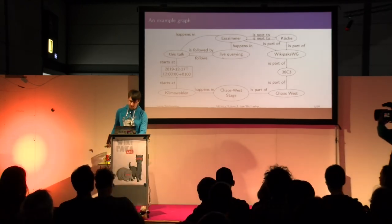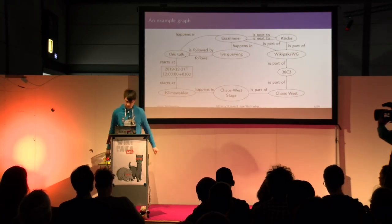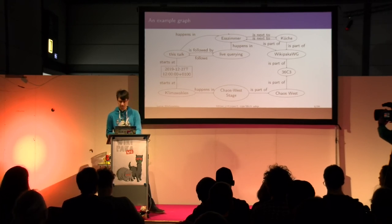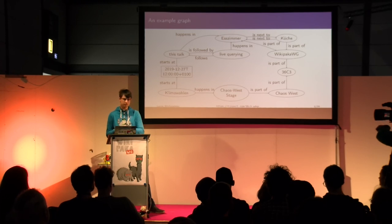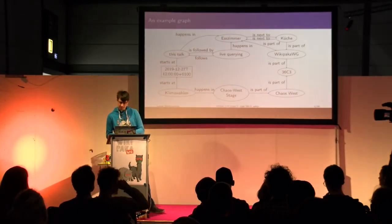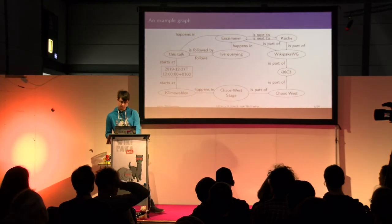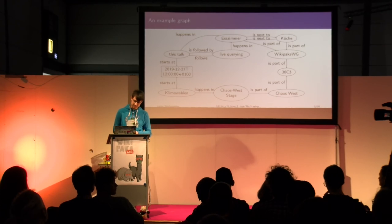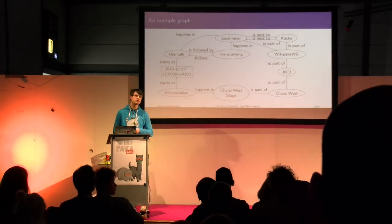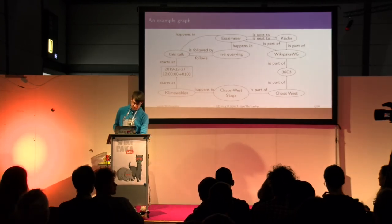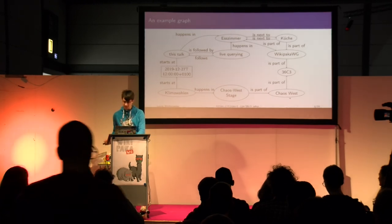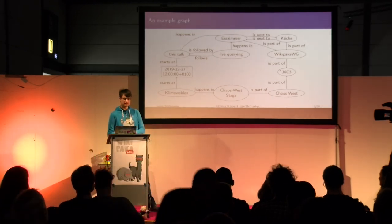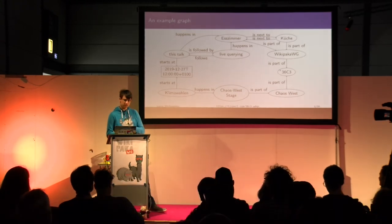This talk is going to be followed by the live querying session, which also happens in S-Cimer, and the live querying session in turn follows this talk. S-Cimer, the dining room, is next to the kitchen, and the kitchen is next to the dining room. Both of them are part of the Wikipaka WG, which is part of 36C3. The talk happens right now. At the same time there's a talk about state elections as climate elections on the Cow's West stage, which is also part of 36C3.